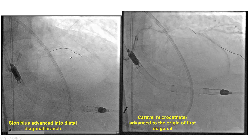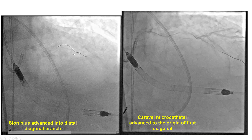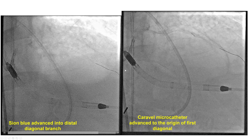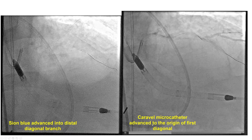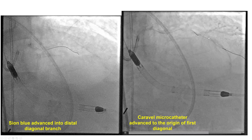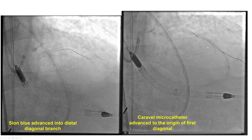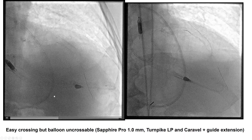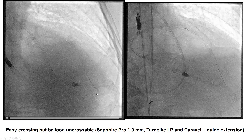To our surprise, we were able to advance a workhorse wire into the diagonal branch, and then, getting the Caravel microcatheter right at the proximal cap, we were then able to easily advance a Fielder XT wire into the distal LAD.